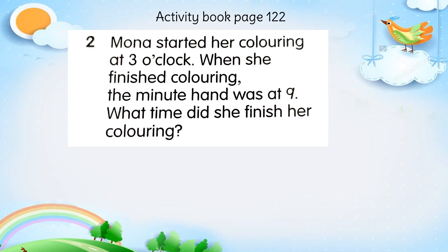Number two. Mona started her colouring at 3 o'clock — Mona mula mewarna pada pukul 3. When she finished colouring, the minute hand was at 9 — apabila dia selesai mewarna, minute hand ialah jarum yang panjang menunjukkan nombor 9. What time did she finish her colouring? Pada pukul berapakah dia selesai mewarna?